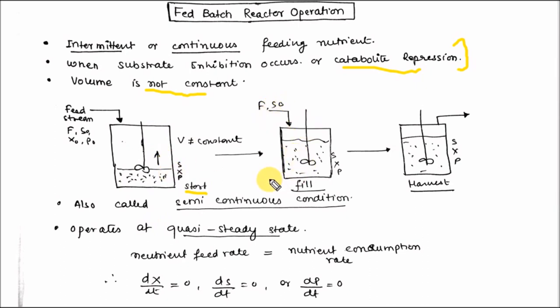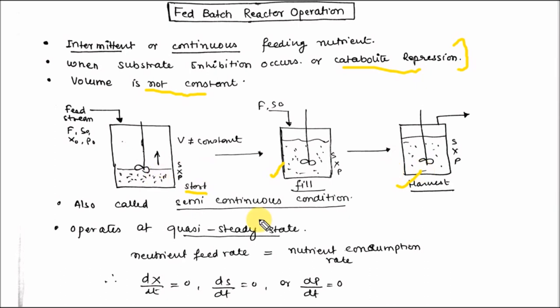At the start the reactor volume is lower, and when the reactor is filled that is the final condition. After fermentation time or residence time, the substrate is converted into biomass and product, and at the end of the cycle you harvest the product or biomass. This is also called semi-continuous operation.